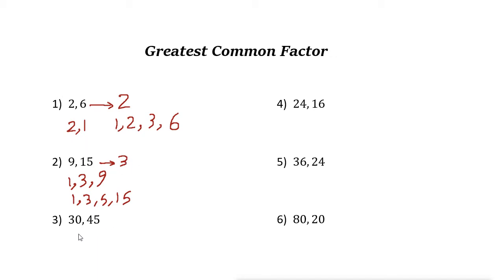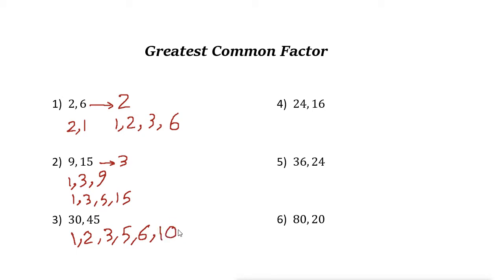Next, let's find the factors of 30. We need to find all numbers that 30 is divisible by. The factors of 30 are 1, 2, 3, 5, 6, 10, 15, and 30.